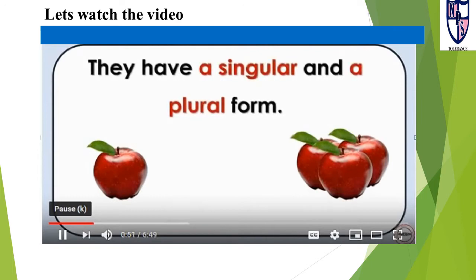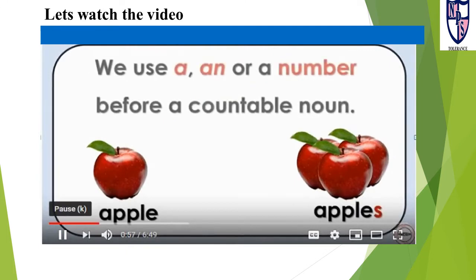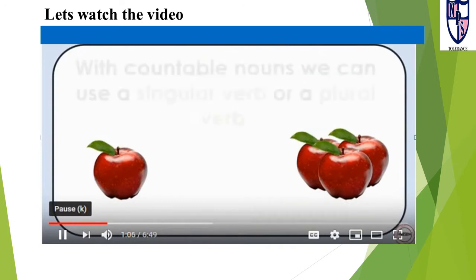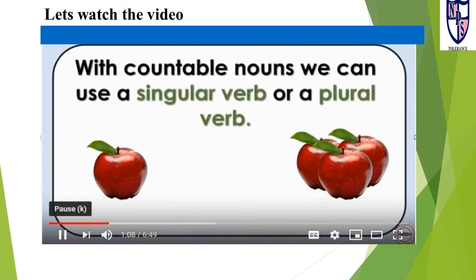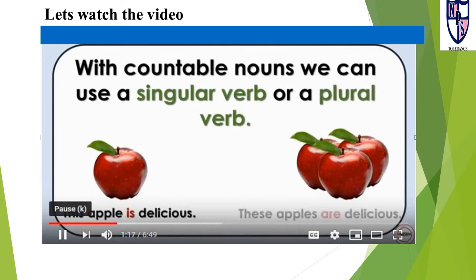Countable nouns have a singular and a plural form: apple, apples. We use a, an, or a number before a countable noun — an apple, three apples. With countable nouns, we can use a singular verb or a plural verb: this apple is delicious; these apples are delicious.